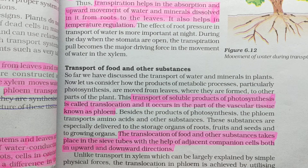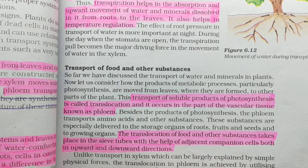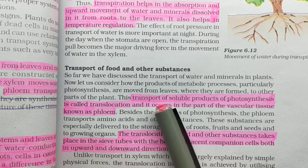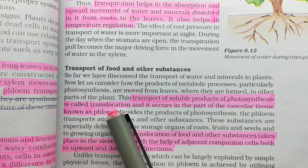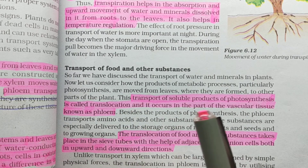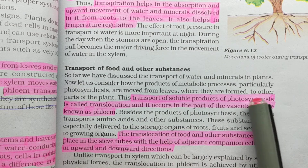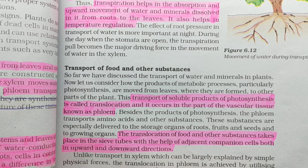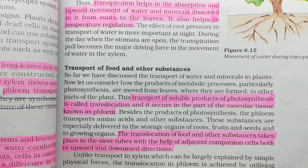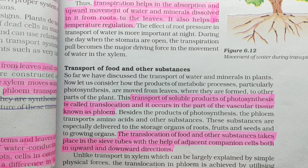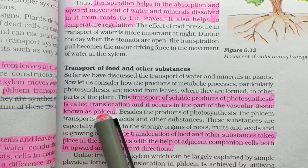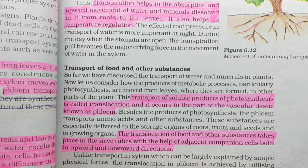The transport of soluble products of photosynthesis — glucose made by leaves — is called translocation. Transportation of food is translocation, and it occurs in the part of the vascular tissue known as phloem. The tissue is called phloem, and the phenomenon occurring within it is called translocation.